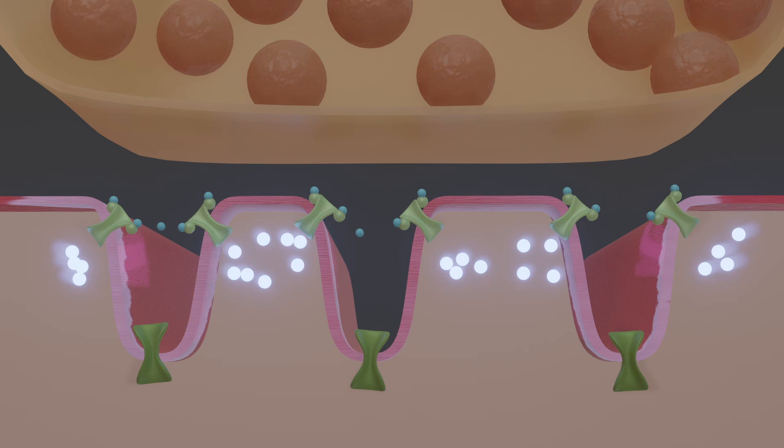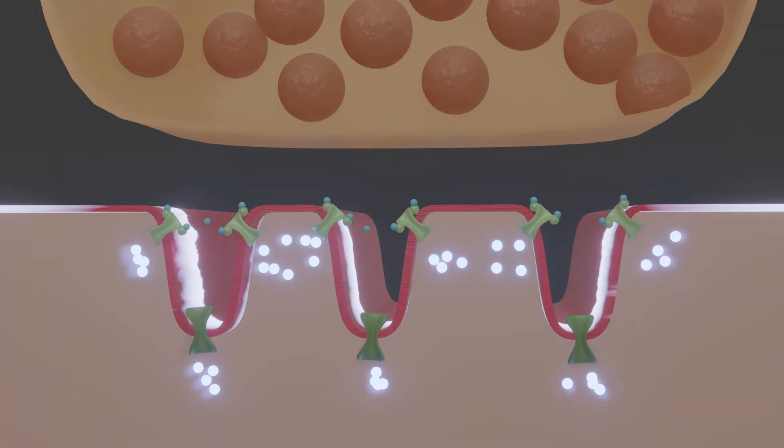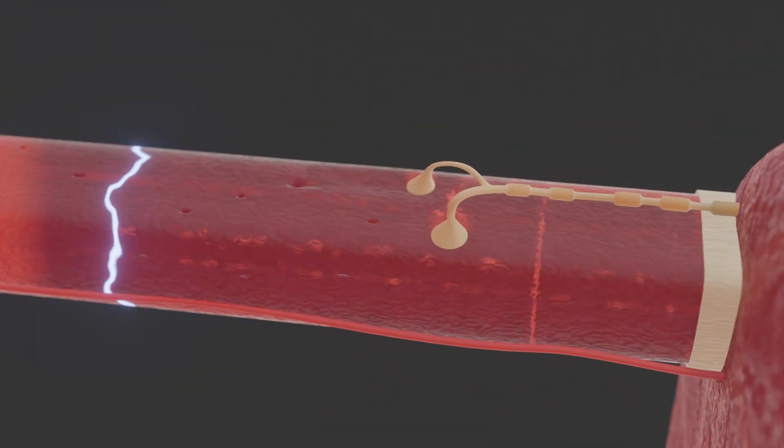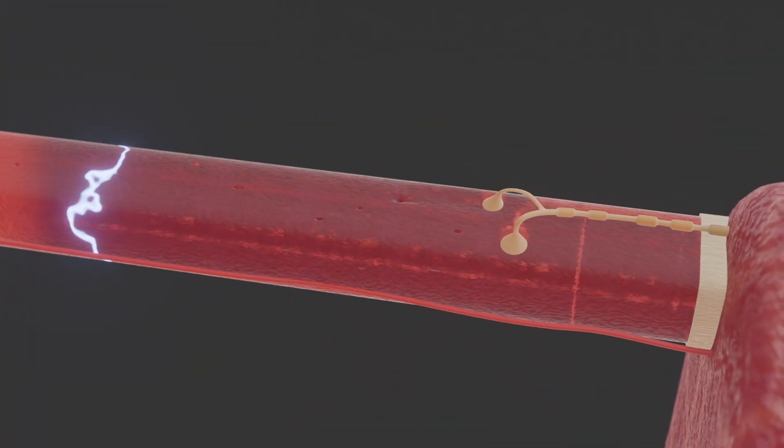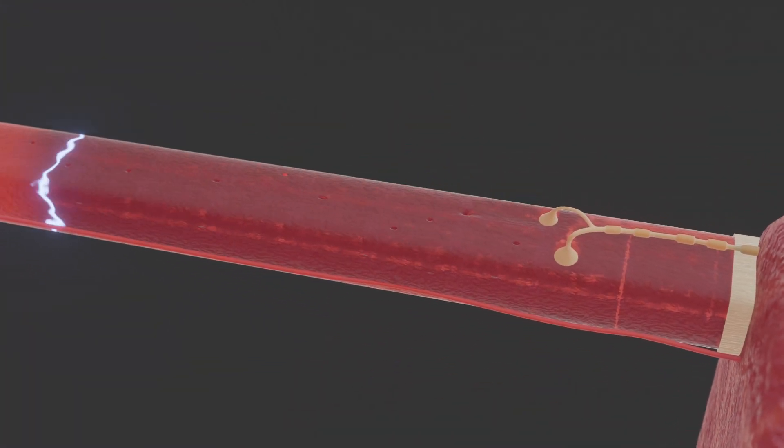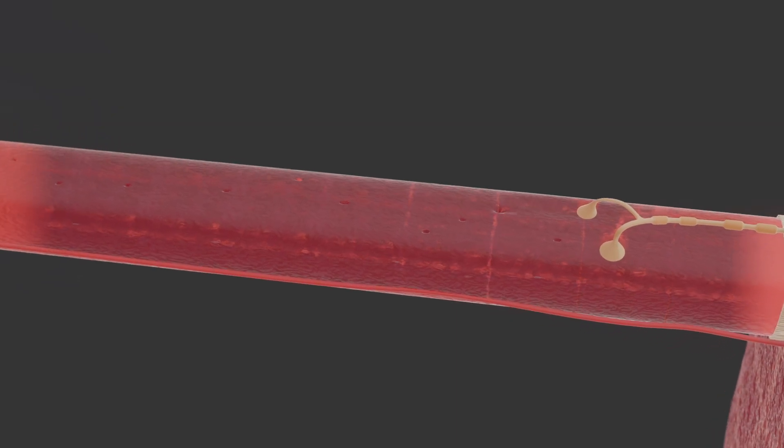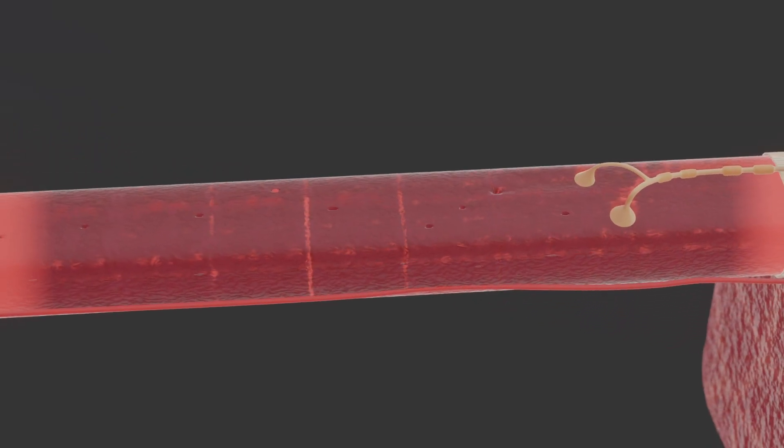Voltage-dependent sodium channels at the base of the membrane folds open and ensure that the threshold value is exceeded. This creates an action potential that spreads along the sarcolemma. The signal reaches deep into the muscle cell through invaginations of the cell membrane and initiates a contraction.